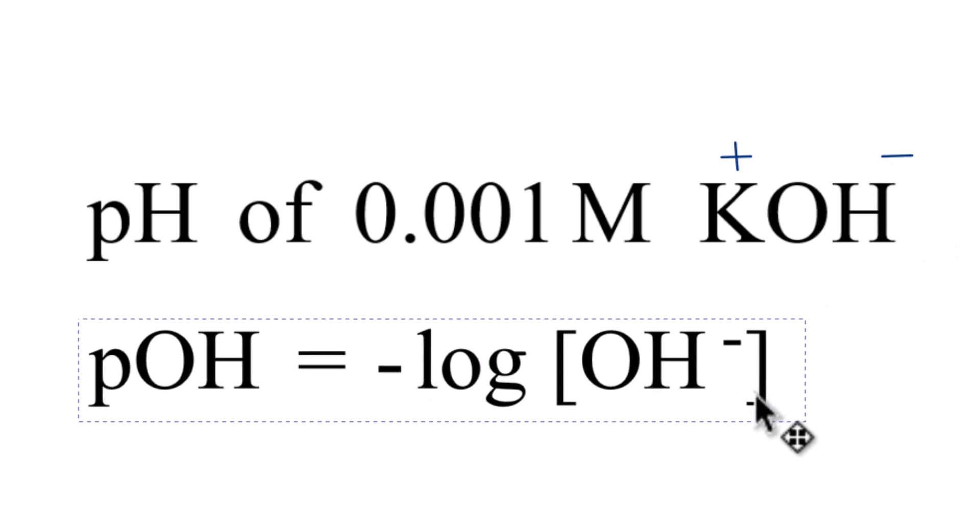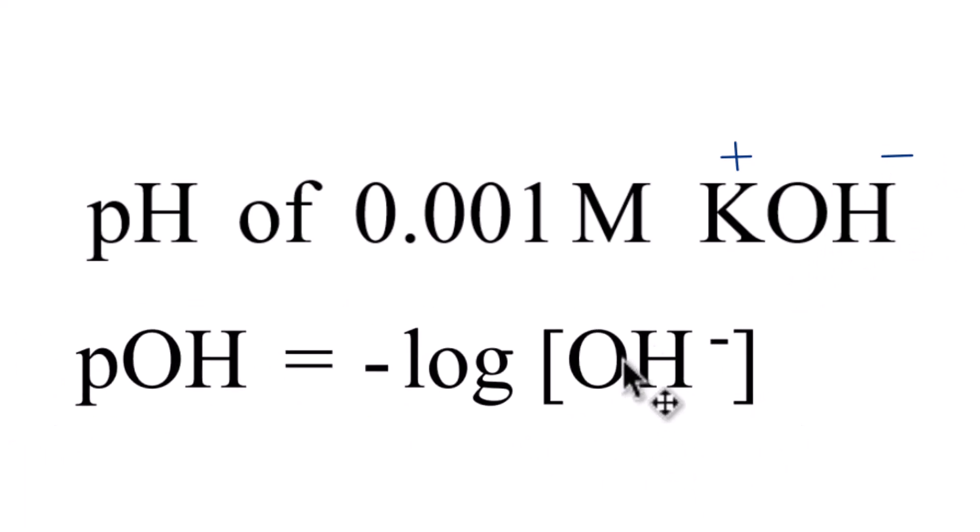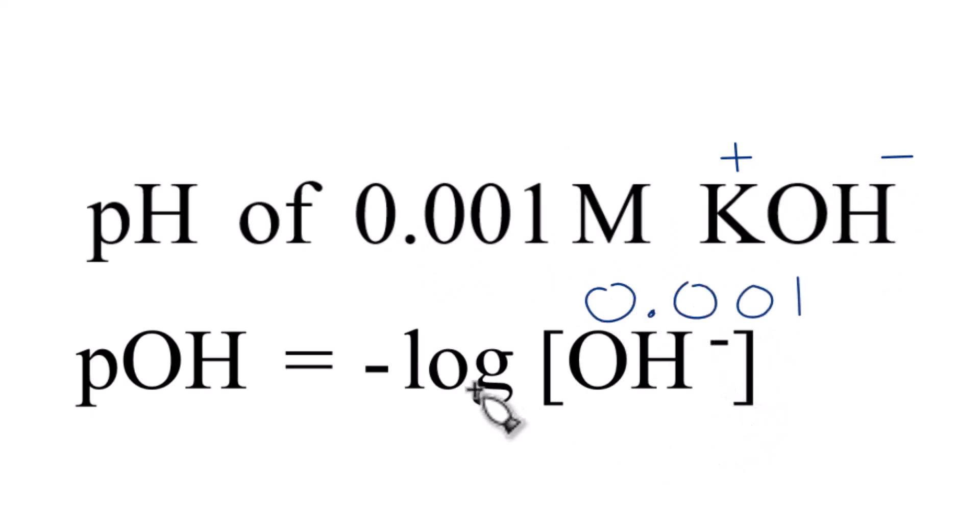What we need is to find the pOH first of our 0.001 molar solution of potassium hydroxide. So pOH is the negative log of the concentration of the hydroxide. And we have 0.001. That's our concentration. If we take the negative log of 0.001, we get three. So three is the pOH.